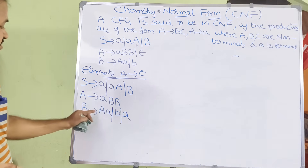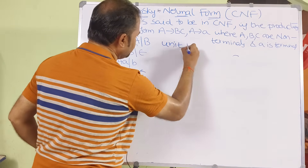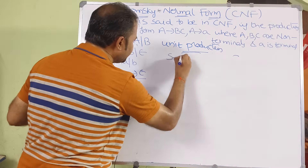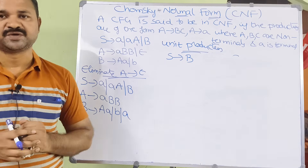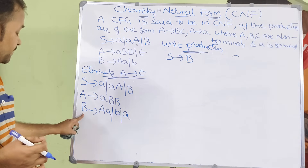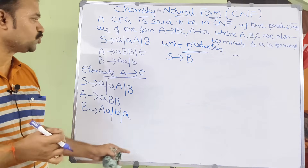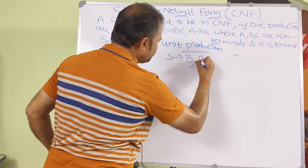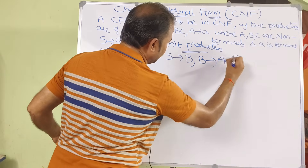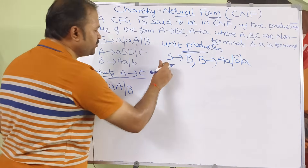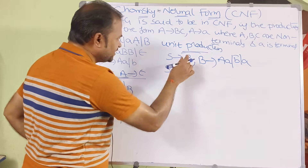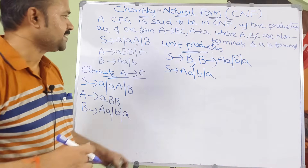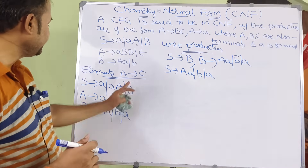Now we verify for unit productions. A unit production is when a non-terminal produces a single non-terminal. Here, S produces B is a unit production. To remove it, we substitute the productions of B in place of S produces B. Since B produces AA, B, or A, we replace S produces B with S produces AA, B, and A. The grammar now contains no unit productions.